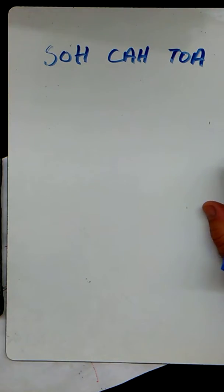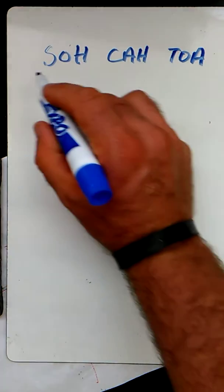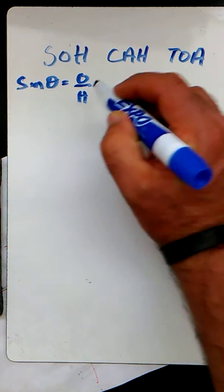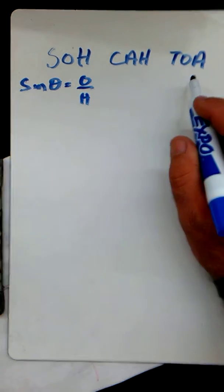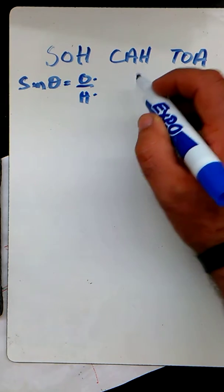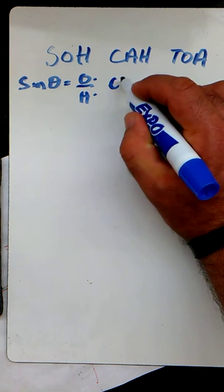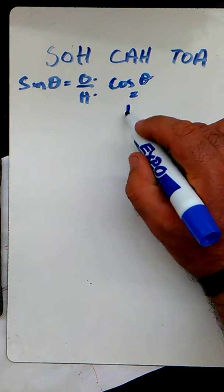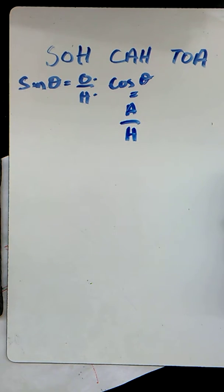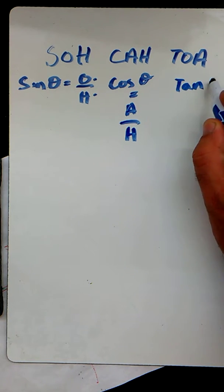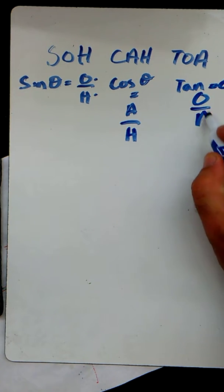You guys remember this from math class, SOHCAHTOA, which tells us that the sine of any angle in a right angle triangle is the opposite side over the hypotenuse side. And with cosine, the cosine of an angle is equivalent to the adjacent over the hypotenuse side. And with tangent, the tangent of the angle equals the opposite side over the adjacent side.